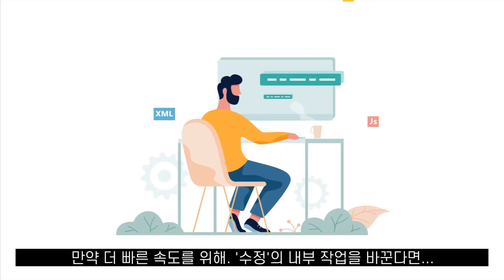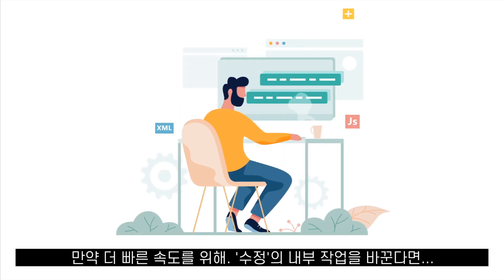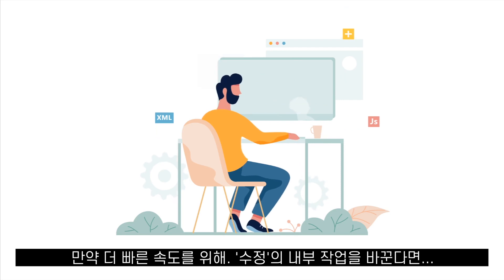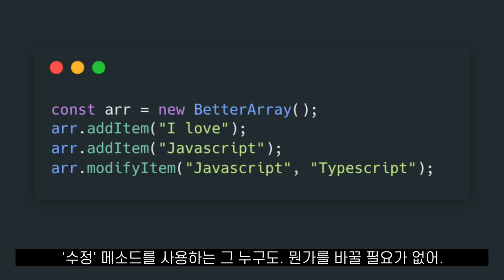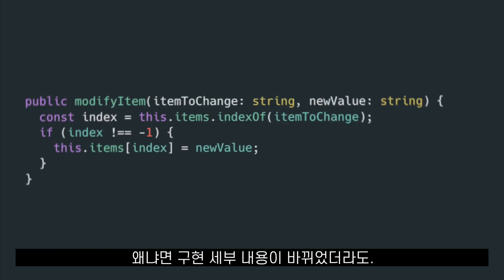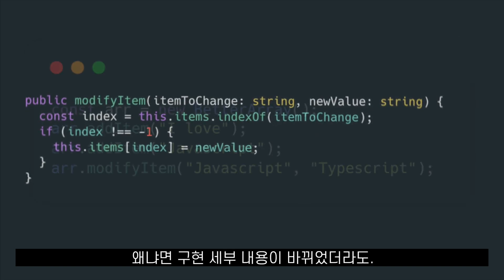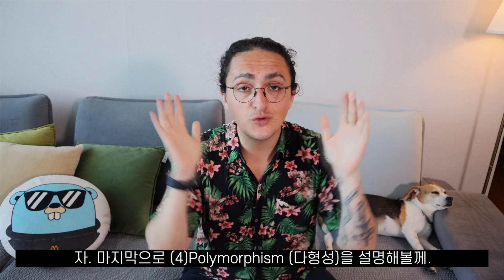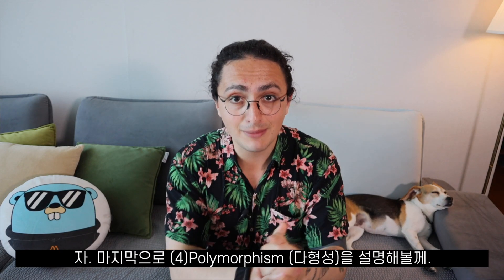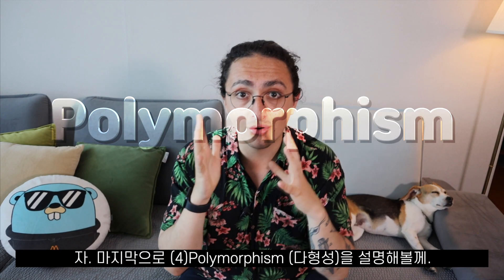Another big benefit of using abstraction is that if tomorrow I change the way the modifyItem method works to make it faster, no one using the modify method will have to change anything, because even though the implementation changed, the interface remains the same. Now, to finish this, let's talk about polymorphism.